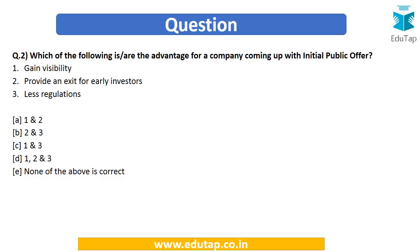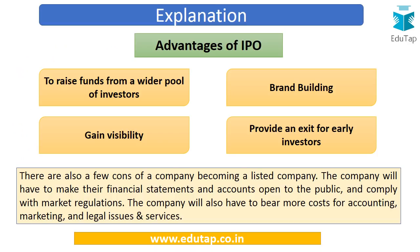Next question: which of the following is an advantage for a company coming up with an initial public offer or IPO? Options are: (1) gain visibility, (2) provide an exit for early investors, (3) less regulations. The answer choices are: one and two, two and three, one and three, one two and three, or none of the above is correct.